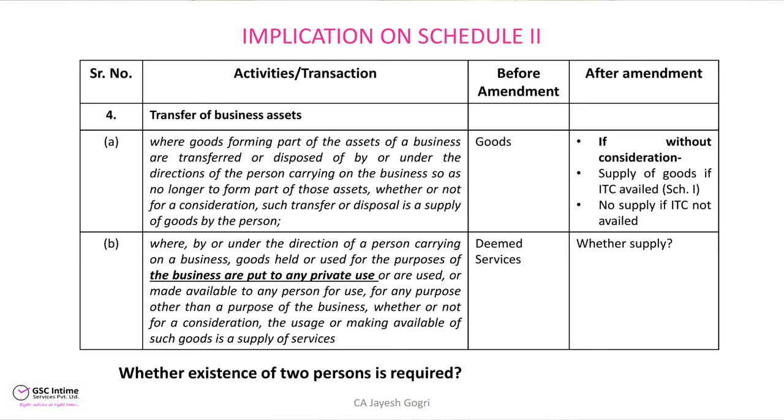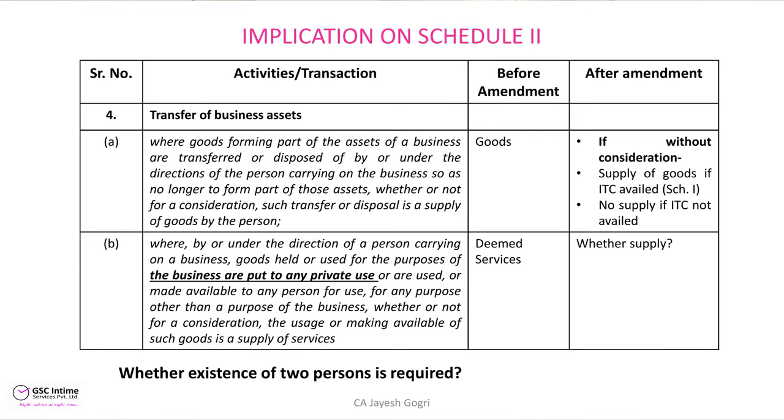We will talk about the typical items prescribed in Schedule 2 and discuss the ramifications if, under this new definition, certain activities are no longer considered supply — and what will happen to taxes already paid or penalties. Item number 4 in Schedule 2 talks about transfer of business assets. Clause 4A says: goods forming part of the assets of a business that are transferred or disposed of by the person carrying on the business so as no longer to form part of those assets, whether or not for a consideration, is a supply of goods.